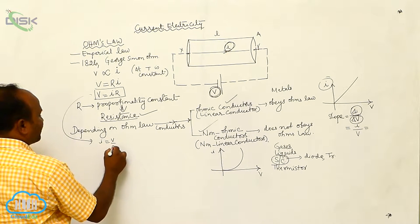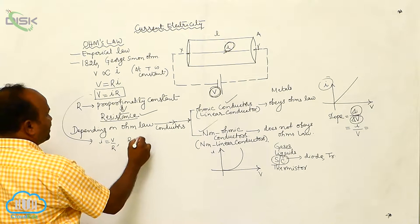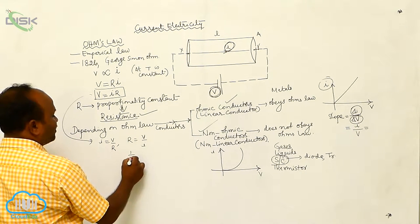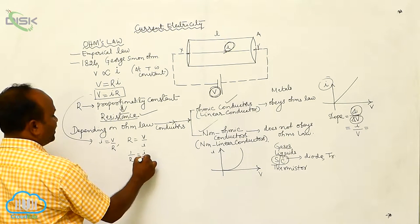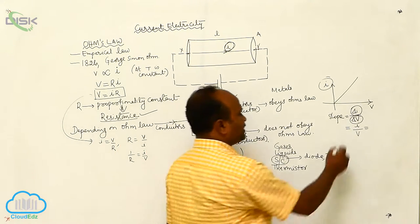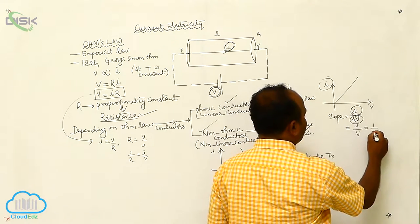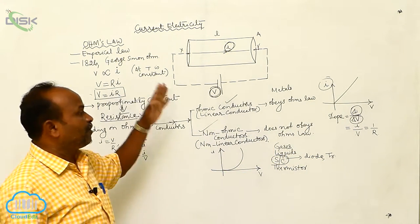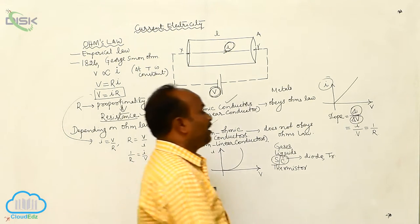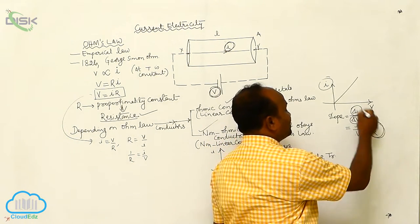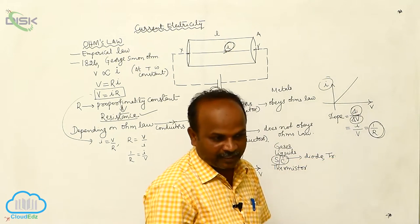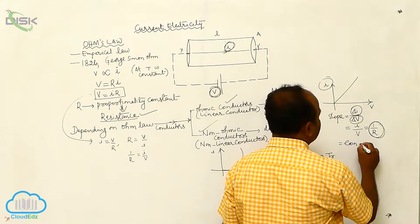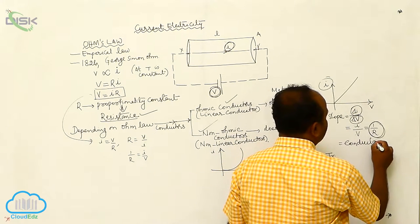From V = IR, we get I = V/R, so R = V/I. Therefore 1/R = I/V. The slope of the V-I graph equals I/V, which equals 1/R. So the slope of the V-I graph is the reciprocal of the resistance.